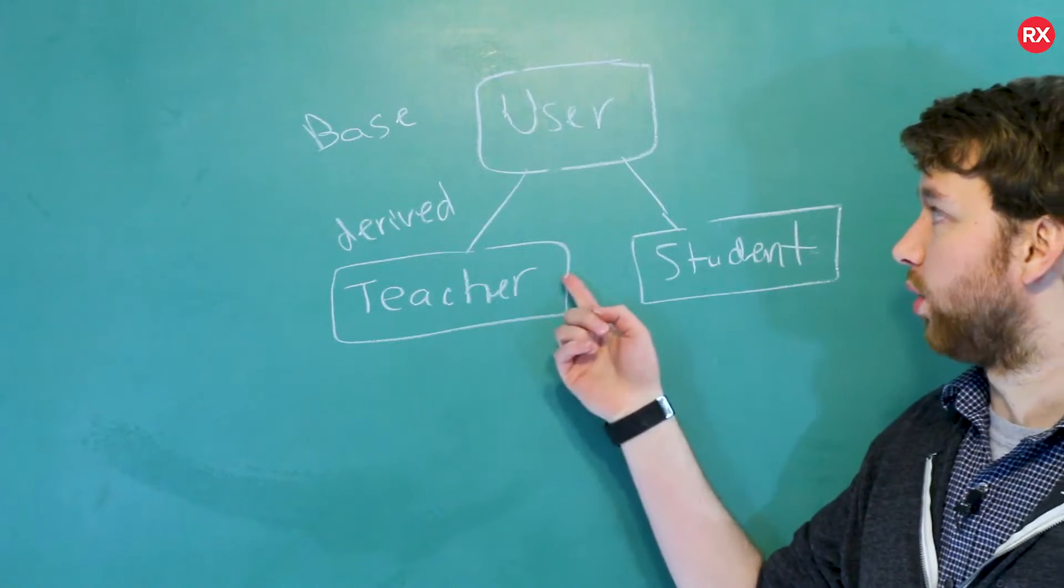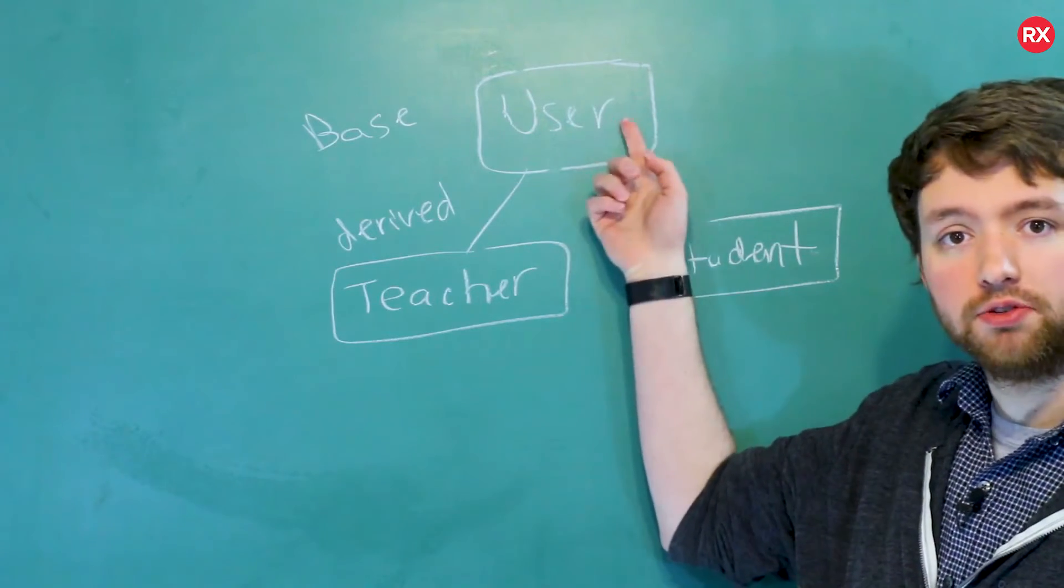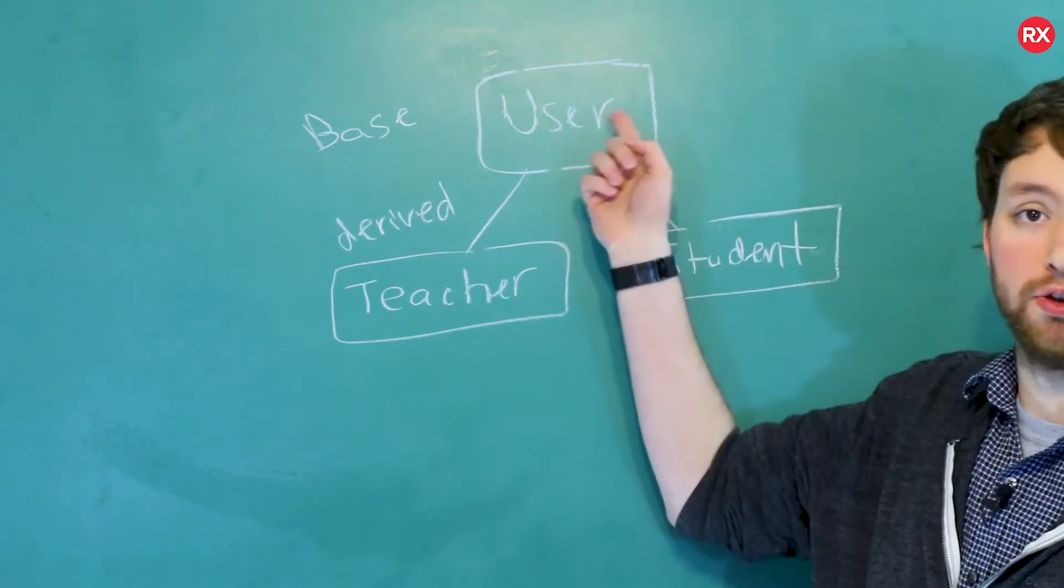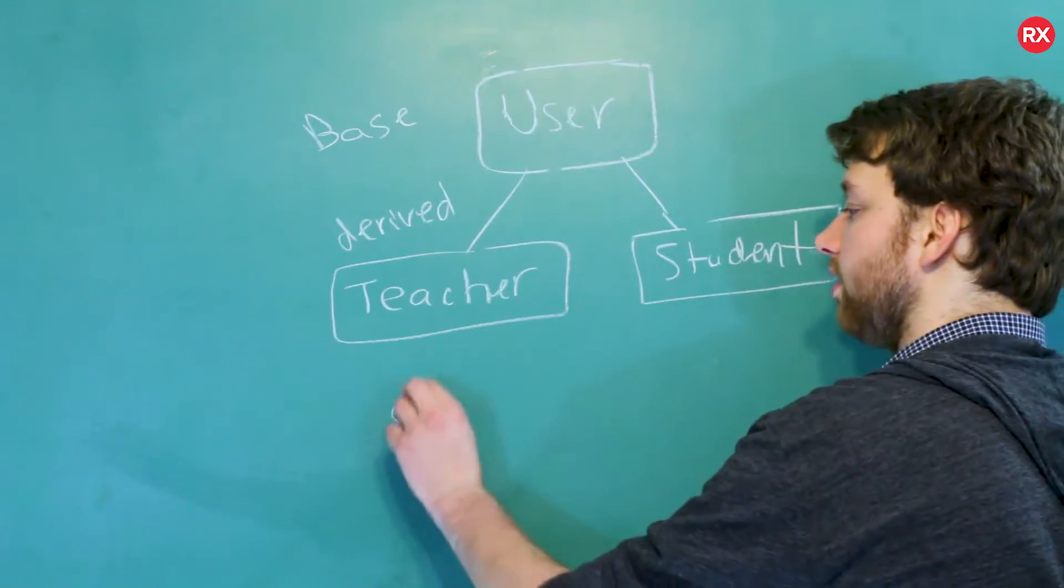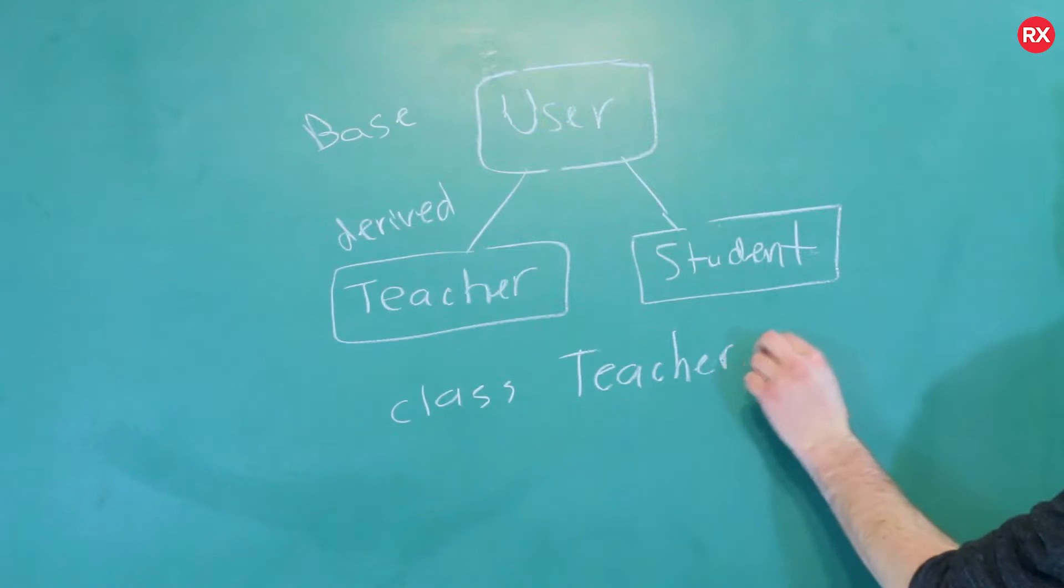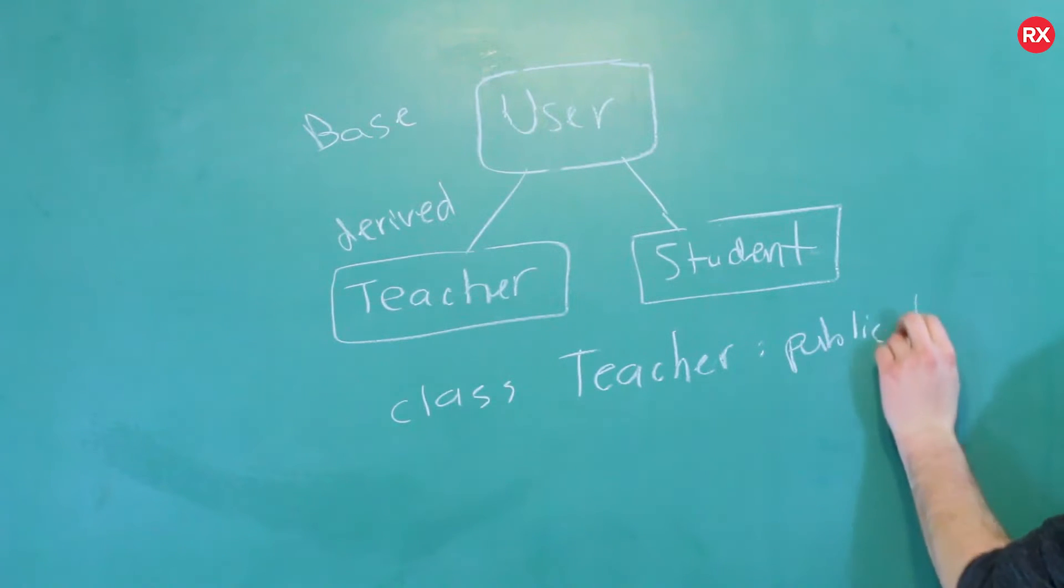Basically, the teacher is going to get all of the stuff that's in the user, and the student is going to get all the stuff from the user as well. So when you define the teacher, it's going to look like this. You're going to say class teacher, and you're going to put a colon, and then say public user.